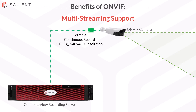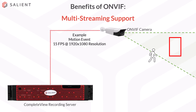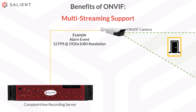Another benefit with ONVIF is multi-streaming support. Multi-streaming is an important function in modern surveillance systems, and the vast majority of cameras support using multiple simultaneous streams for efficiency and flexibility. In CompleteView, you can use a low-res, low frame rate stream for normal continuous recording. When properly configured, you can use motion detection and shift to record a separate high frame rate, high resolution stream, or shift to a third configured stream when an alarm is triggered. This helps save on storage space, and taking advantage of multi-stream recording in CompleteView can only be done using the ONVIF driver when adding cameras.